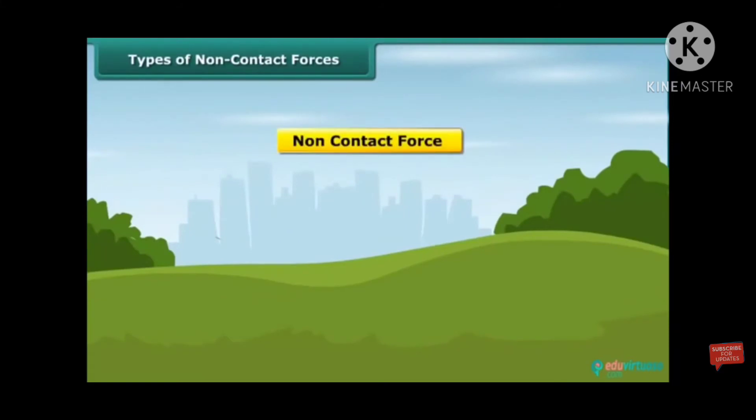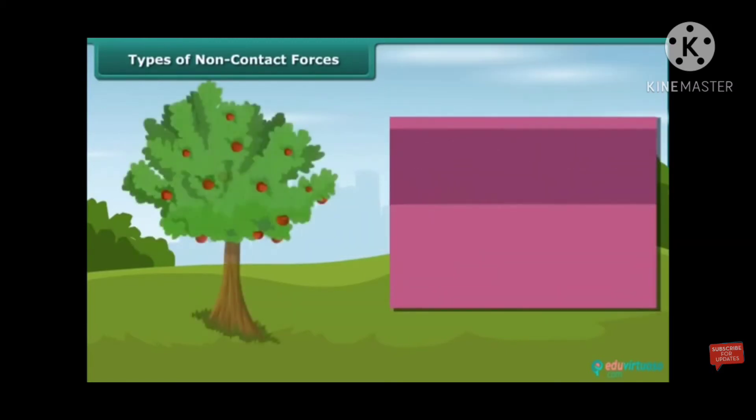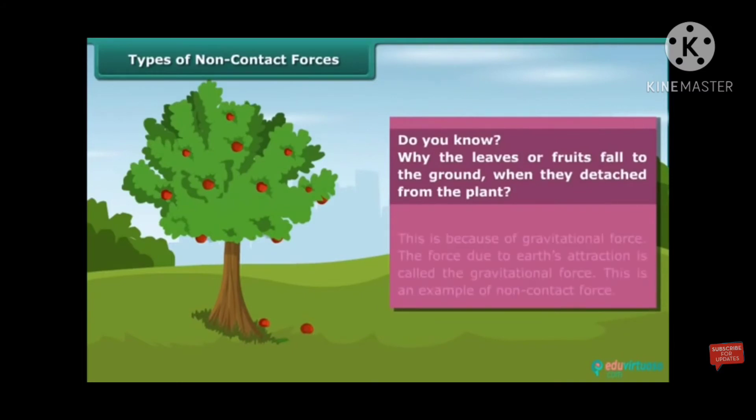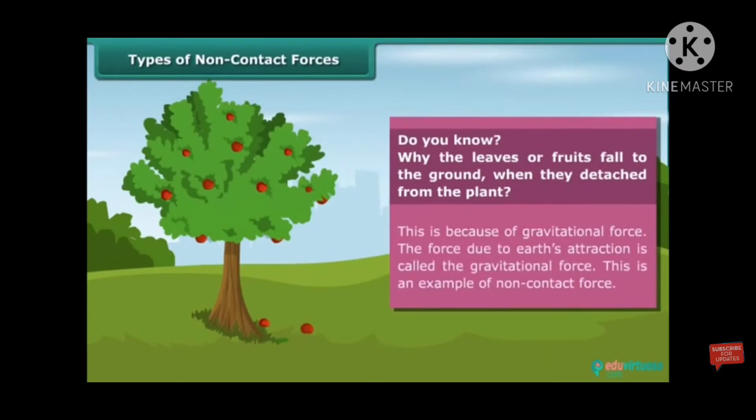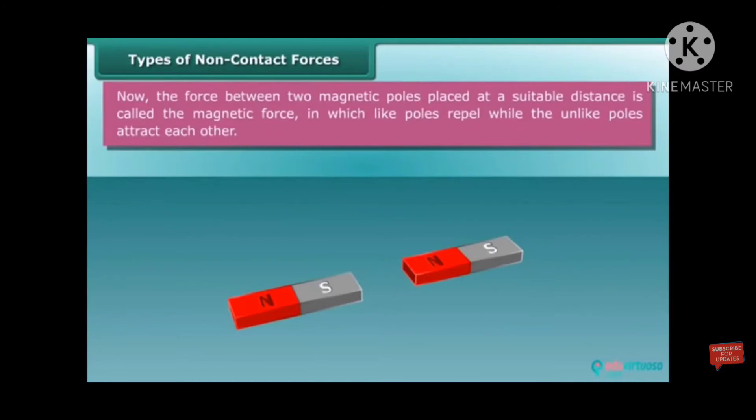Next, types of non-contact forces: gravitational force, magnetic force and electrostatic force. Do you know why the leaves or fruits fall to the ground when they detach from the plants? This is because of gravitational force. The force due to earth's attraction is called gravitational force. And this is an example of non-contact forces.